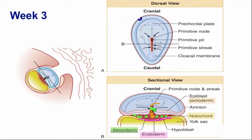We will then subdivide the ectoderm cells into three kinds depending upon where in the upper layer they are found. Those closest to the midline we call neuroectoderm. Those immediately alongside them we call neural crest ectoderm. All of the remainder we call surface ectoderm. So we end up with three kinds of ectoderm depending upon where in that upper layer they are found.